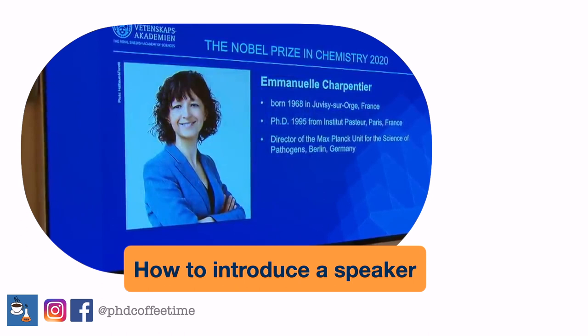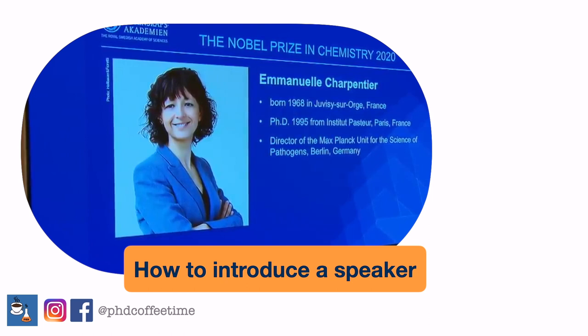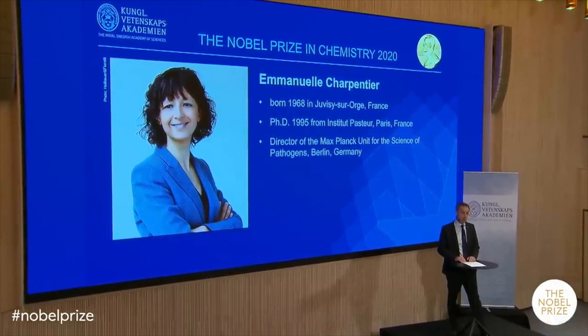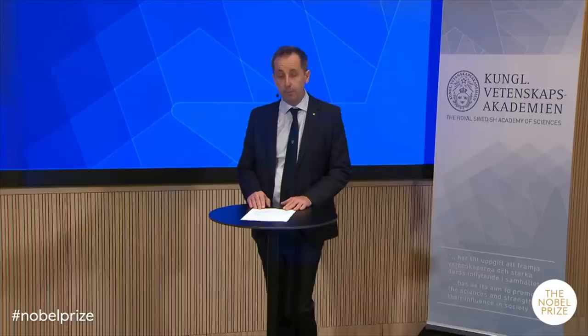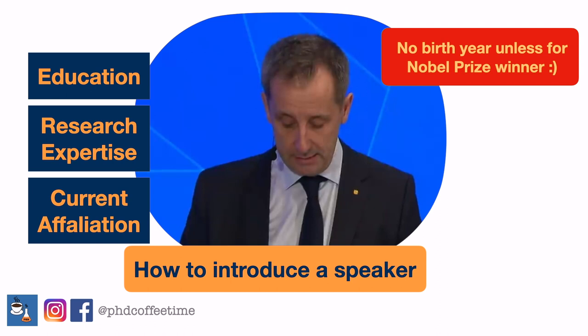Emmanuelle Charpentier was born in 1968 in Chivici-sur-Orge in France. You might not want to introduce your speakers by birth year, except in the very rare occasion that he or she is a Nobel Prize winner. She obtained her PhD in 1995 from Institut Pasteur in Paris. This is a great example of what is necessary before someone gives a talk — you often cover education background, research expertise, and current affiliations.